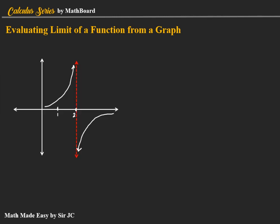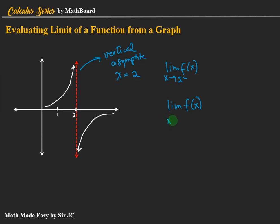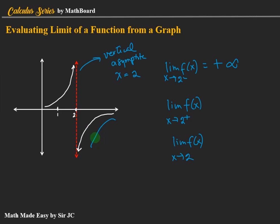Last, a special case: if we have this vertical line, what we call the vertical asymptote — here the vertical asymptote is the line x equals two. The limit of f of x as x approaches two from the left: the function approaches positive infinity. From the right, the function approaches negative infinity. Since positive infinity is not equal to negative infinity, the limit does not exist.